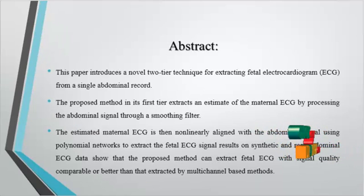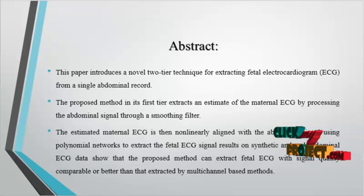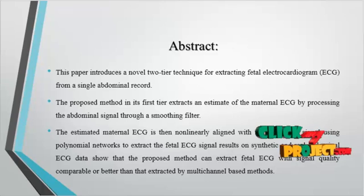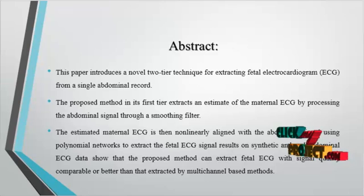This paper introduces a novel two-tier technique for extracting fetal electrocardiogram (ECG) from a single abdominal record. The proposed method in its first tier extracts an estimate of the maternal ECG by processing the abdominal signals through a smoothing filter.